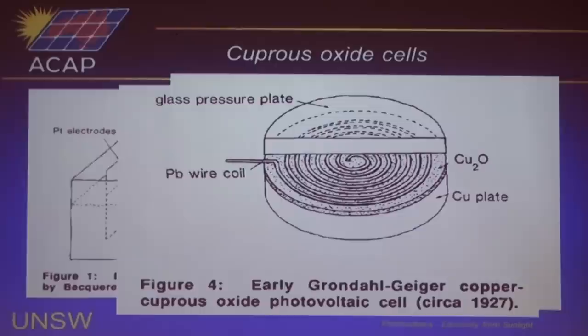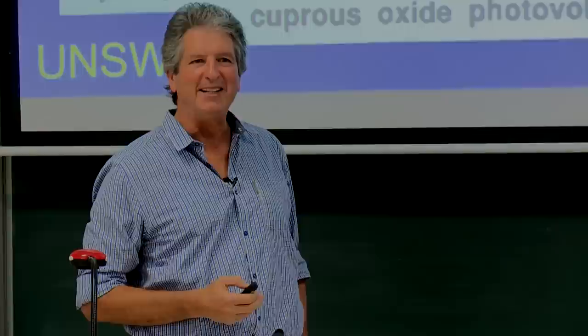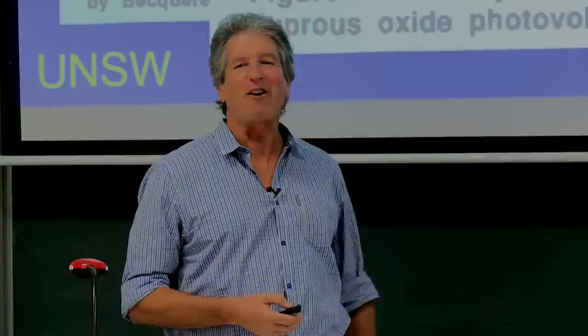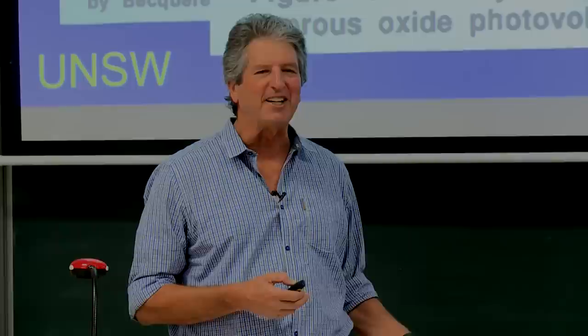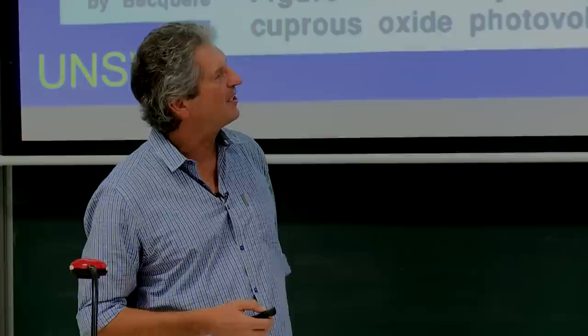The next big development was cuprous oxide. If you oxidise copper — one of my students did a thesis on it — we just used a blowtorch to oxidise the copper to get cuprous oxide on the surface, then pressed a metal against it, and you can get a photovoltaic action. I've heard the term: you can make a photovoltaic device by spitting on a penny, but making an efficient one is the challenge. A lot of prestigious journals like Nature don't publish stuff on silicon devices because that's too boring, but they publish what I call spitting-on-a-penny type papers — interesting effects where no one knows what's going on.